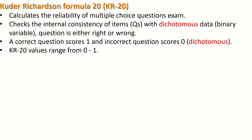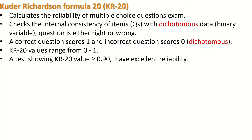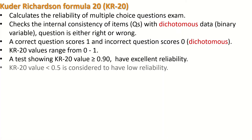KR20 values range from zero to one. A test showing a KR20 value equal to 0.9 or greater has excellent reliability. On the other hand, a KR20 value of less than 0.5 is considered to have low or unacceptable reliability.